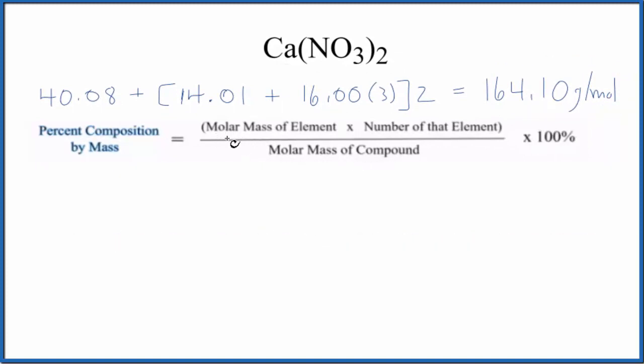Now we can do it for each element. We'll take the molar mass for each element, multiply it by the number of that element, then divide by the molar mass for the compound.